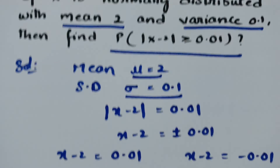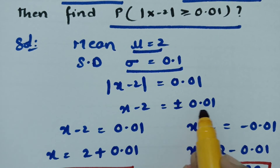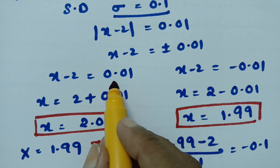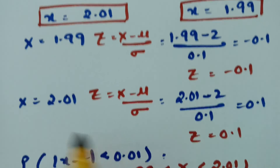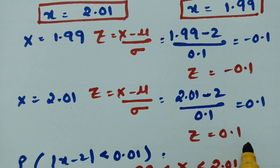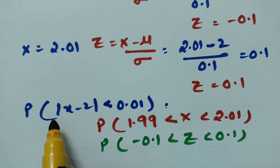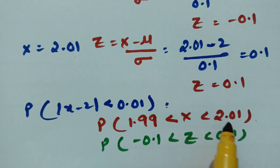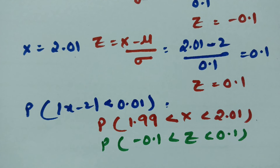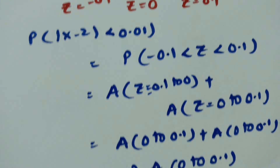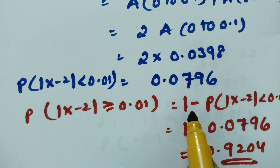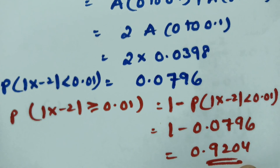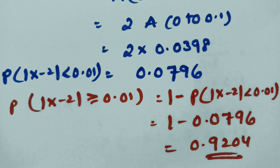To summarize: when we have a modulus, it becomes plus or minus 0.01. Taking positive and negative values gives x equals 1.99 and x equals 2.01, with z values minus 0.1 and plus 0.1. After calculating the less-than probability as 0.0796, we subtract from 1 to get 0.9204. Thank you for watching — please practice and share with your friends.